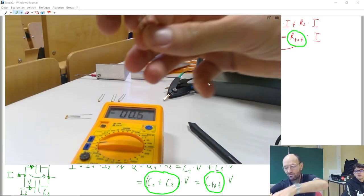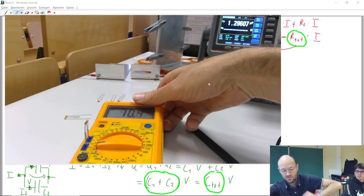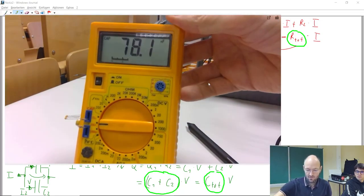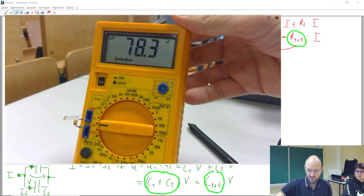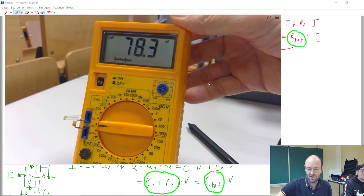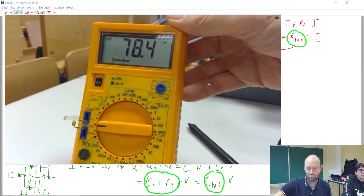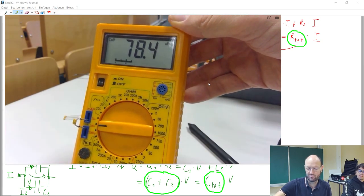80. It should double. So let's check. And then you can see that it does not exactly double, but it's not 80, but 78 point something. But it still nicely fits to what we calculated and measured before. All right. Thank you.